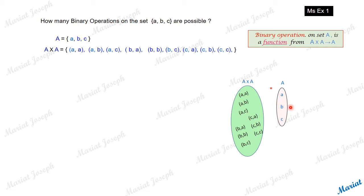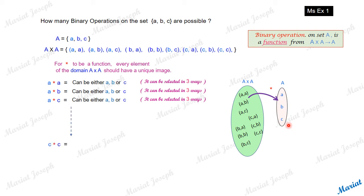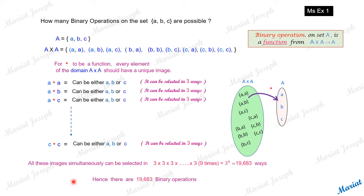Now for the binary operation to be a function, every pair should have a unique image. This time, A star A can have either A, B, or C — three options — so it can be done in three ways. Same with the next pair, A star B: either A, B, or C, so in three ways. Same with all the pairs — three ways each, even the last one. So, to write the function, we choose all these images simultaneously: 3 × 3 × ... nine times, that is 3 raised to the power 9, which comes to 19,683 ways.